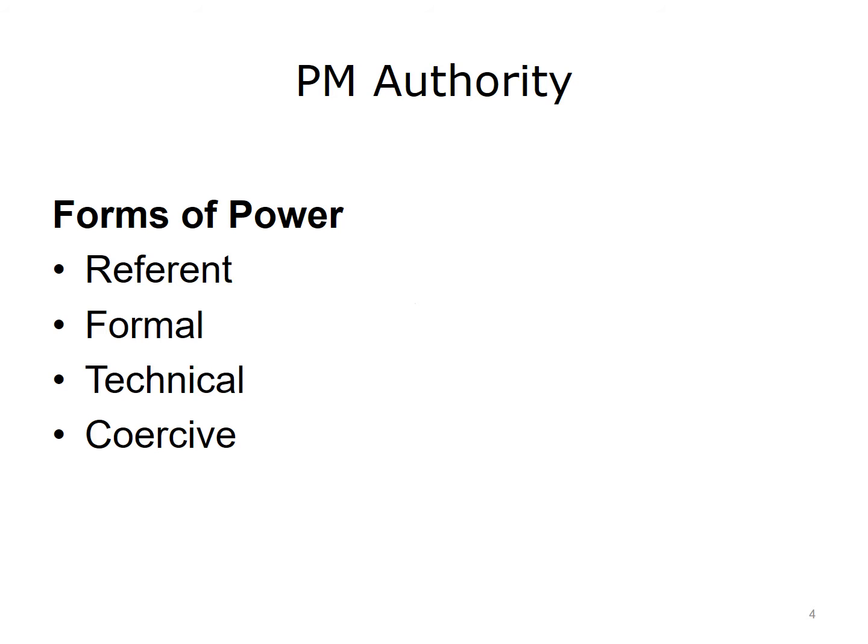When managing a project team, it is important to understand the different types of authority that exist. The team dynamics will be greatly impacted by how power is asserted within the team. Referent power is individual power based on a high level of identification with, admiration of, or respect for the power holder. Formal power is based on rank or position – where the project manager has been assigned by senior management to be in charge. Technical power is based on strong technical skills in the project's domain. Coercive power is authority dependent on fear, suppression of free will, and/or use of punishments or threats.